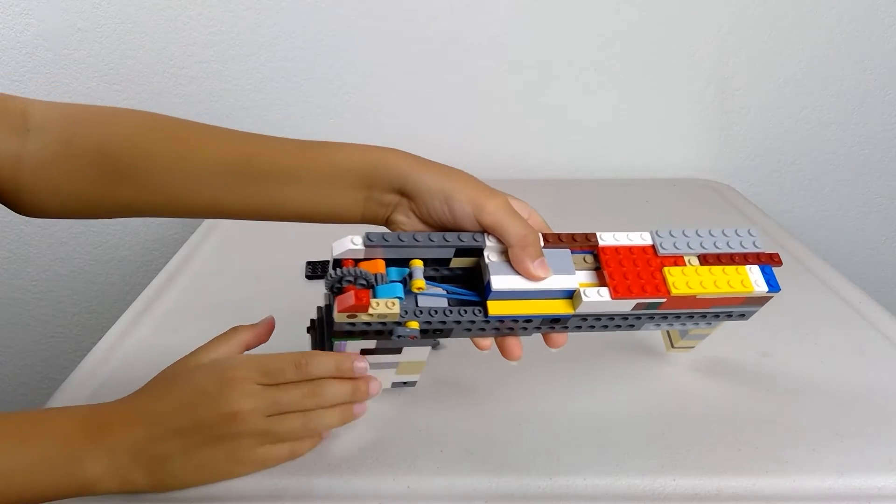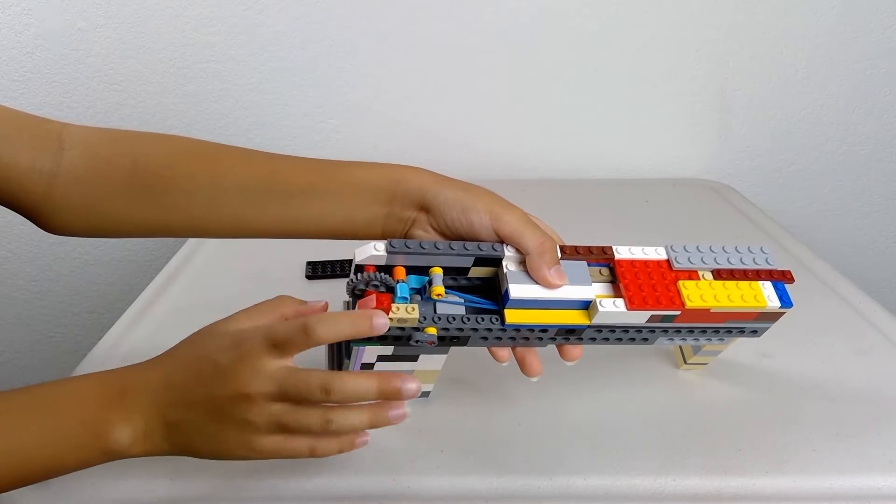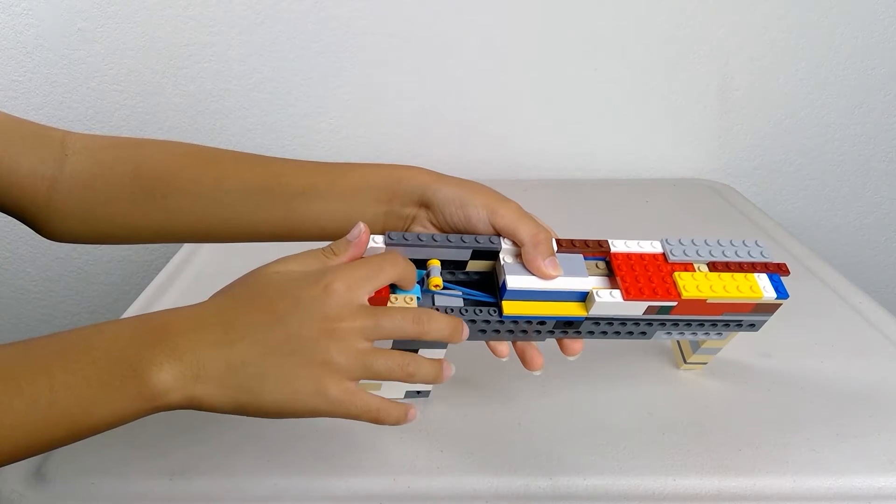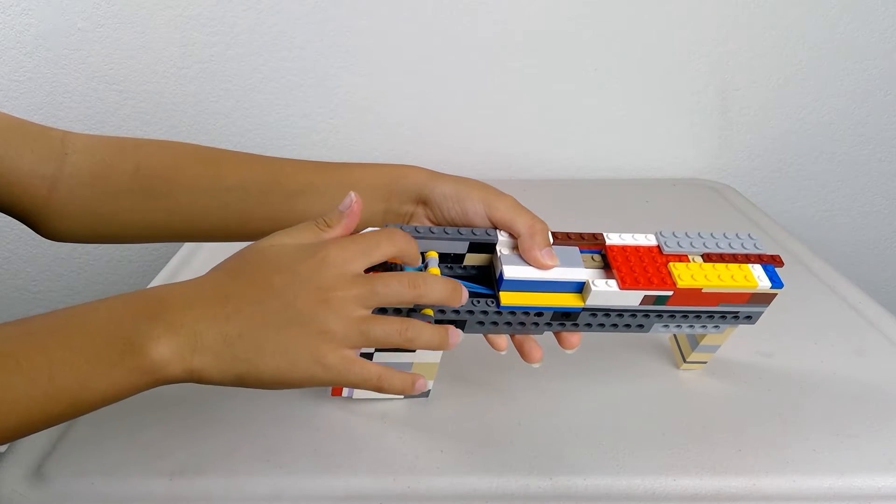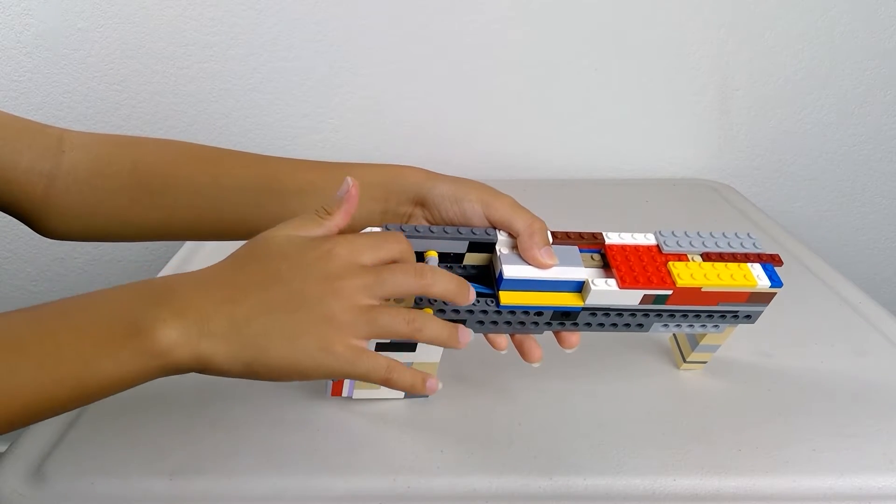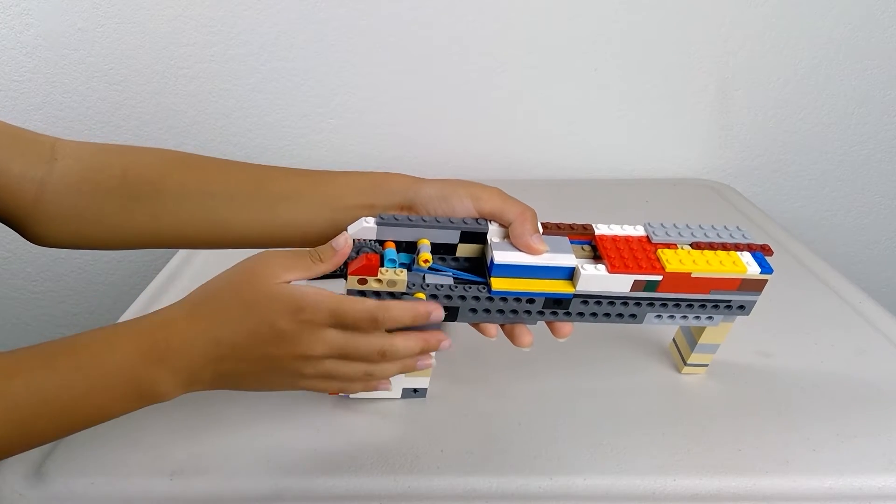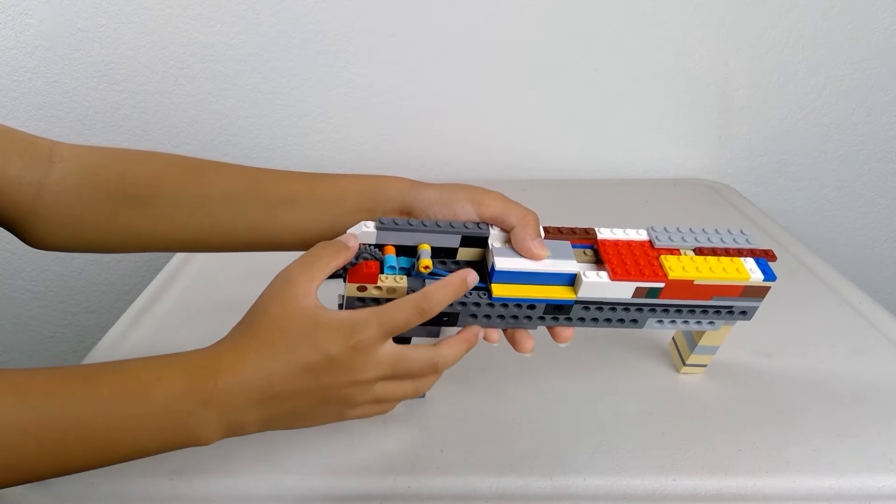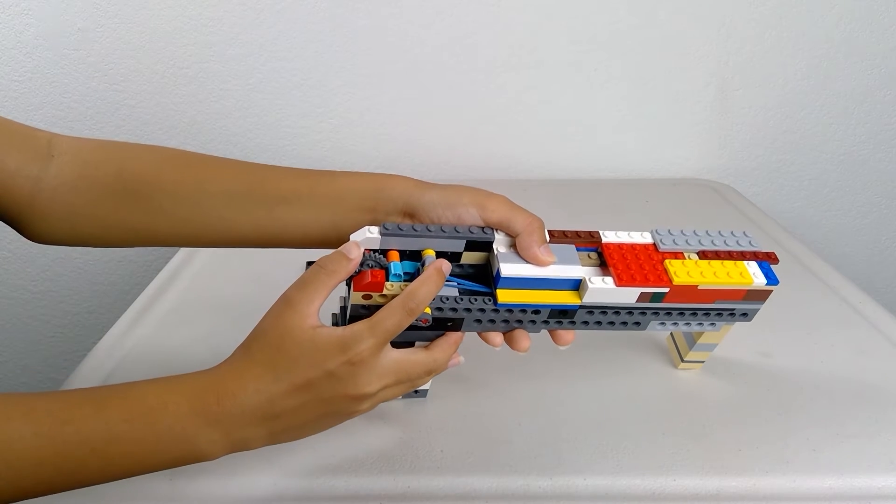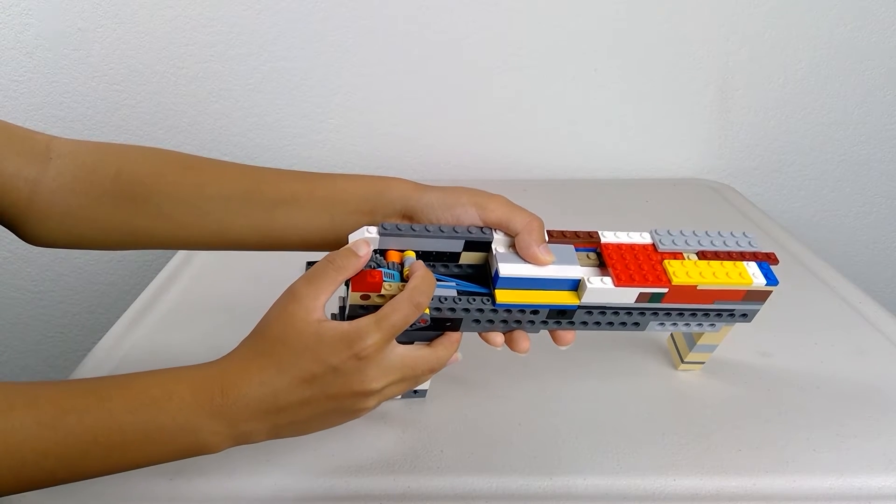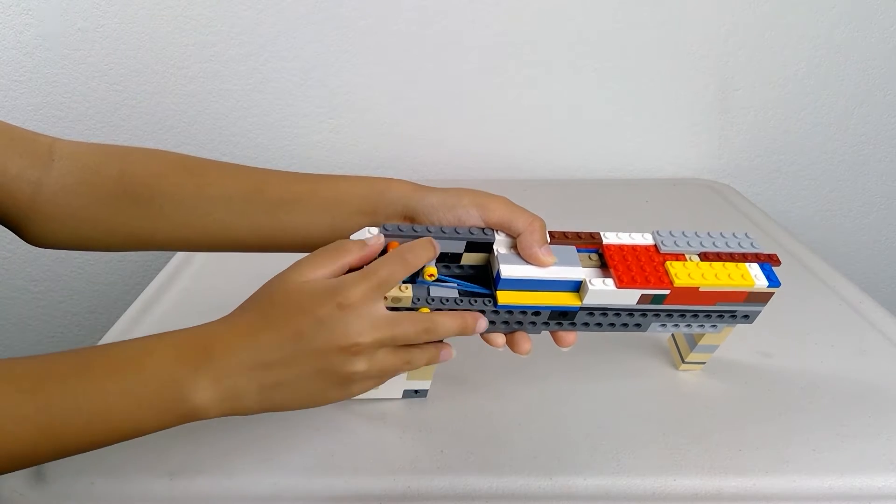As you can see, this is the gear that holds the rubber bands. It is attached to this very small gear along with these two pieces. Now, you see, it cannot be pushed forward because it's locked by this piece right here. That's the bolt lock. But when the bolt lock is pushed backward, it pushes it forward like that.